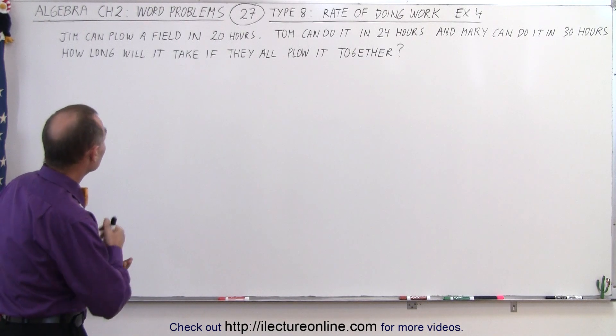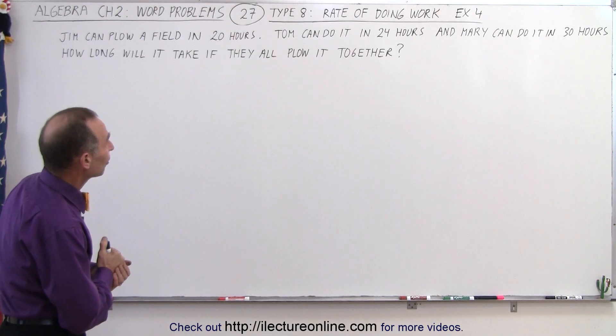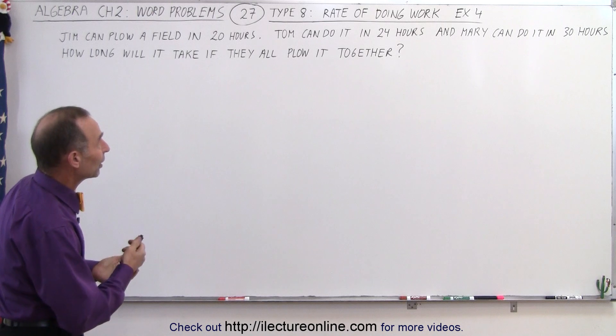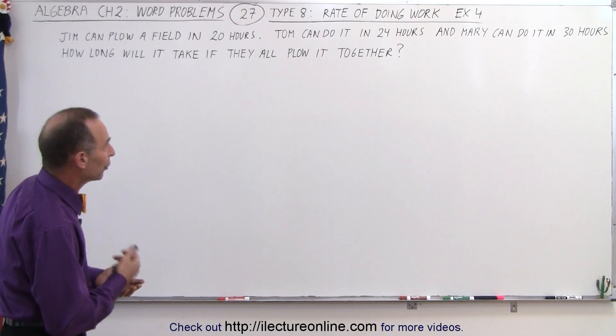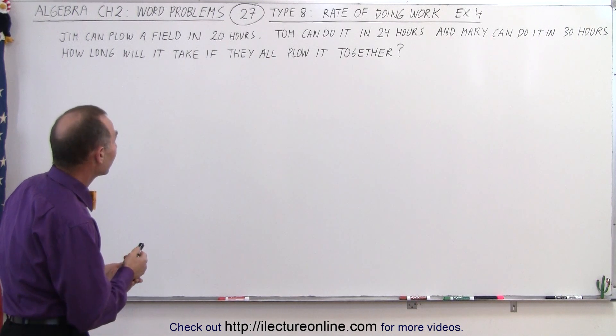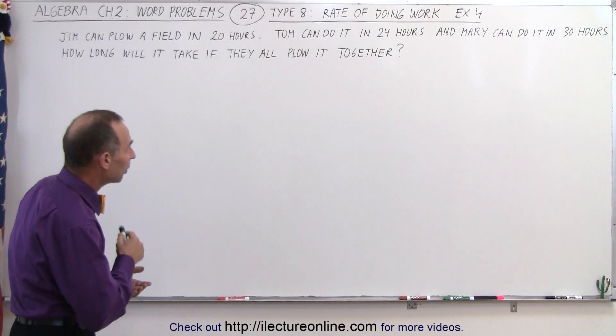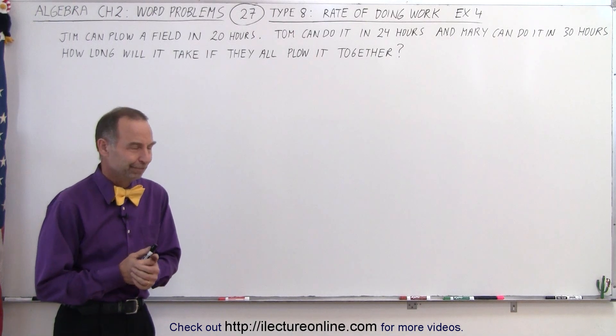Jim can plow a field in 20 hours, Tom can do it in 24 hours, and Mary can do it in 30 hours. How long will it take if they all plow the field together?